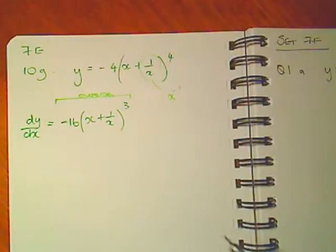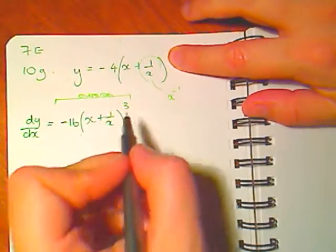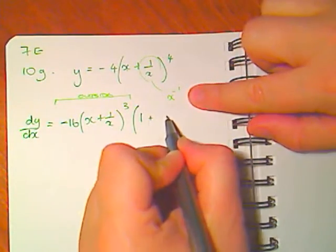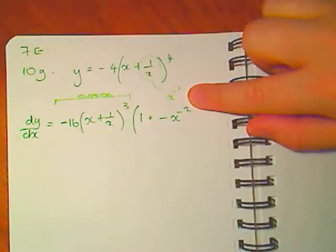And now I want to do the derivative of the inside, where I forget everything else and just look at what's in the middle there. Derivative of x is 1, and the derivative of this will be minus x to the minus 2.